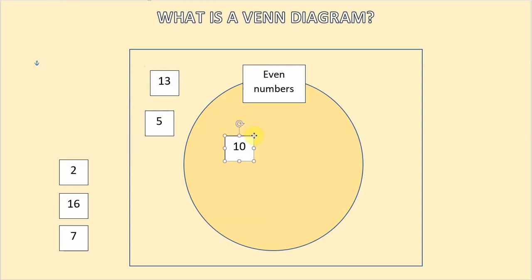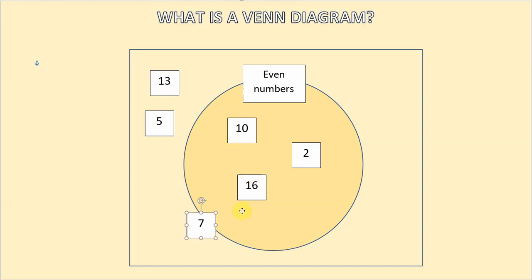Number 10 is even, that goes into our even number set. 16 is also even because it ends in a 6 and 6 is even and finally 7 is an odd number so that again goes in our universal set outside the even number set and that is our first example with a simple one circle Venn diagram.